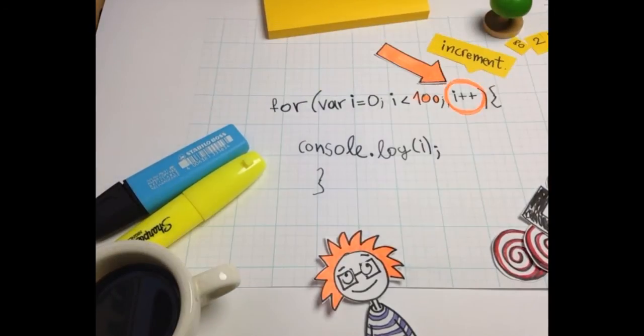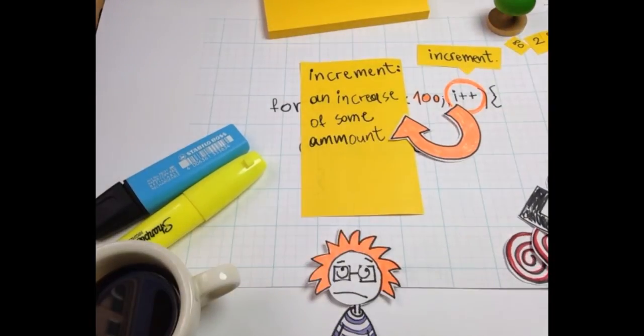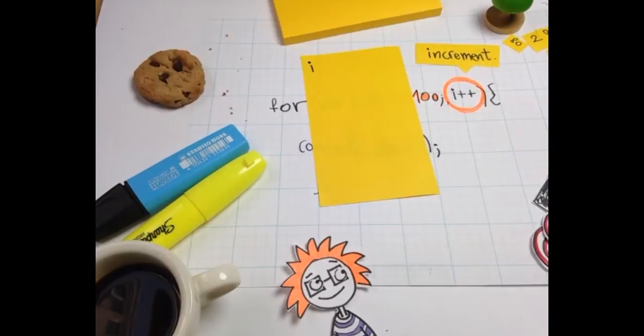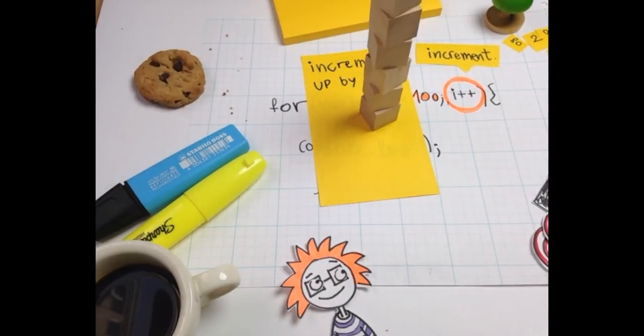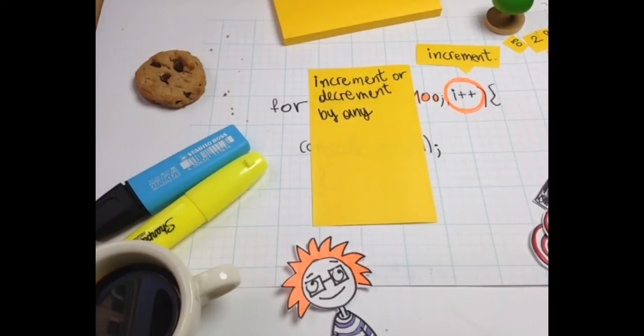And i++ tells us how to increment. Increment: an increase of some amount, like the cookies you're eating right now. You can increment up by 1 by writing i++, decrement down by 1 by writing i minus minus. You can also increment or decrement up or down by any value by writing, for example, a variable.